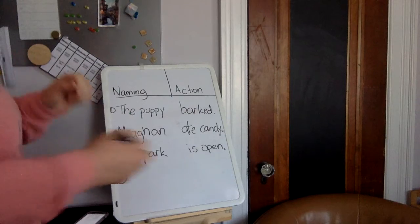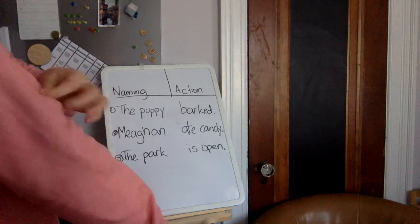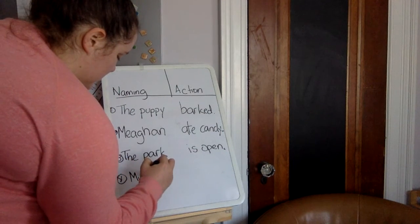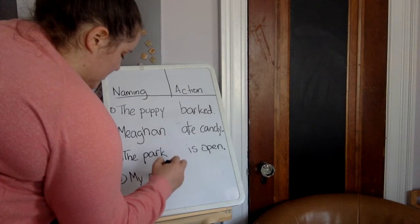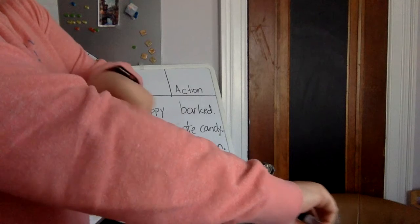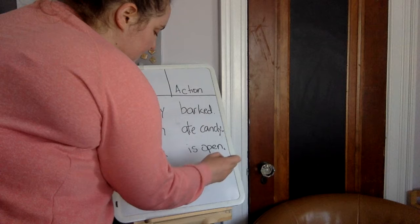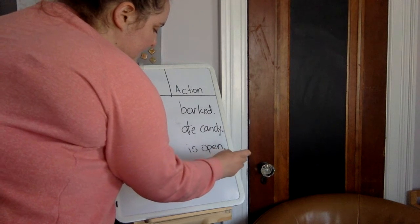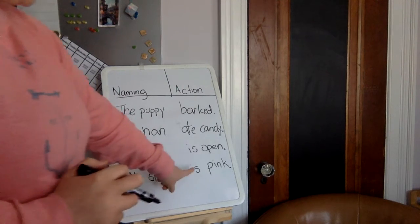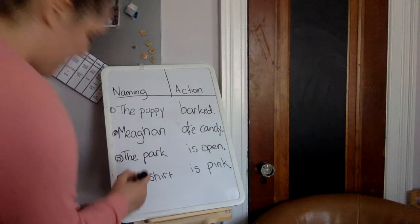So we're going to name something. What is this? It's a shirt. So my shirt, our action is pink. There we go. We have our naming, my shirt, and our action is pink. Let's do one more sentence. We are on a row.